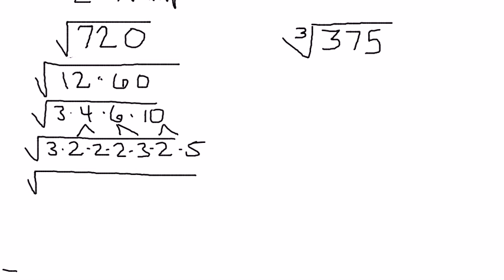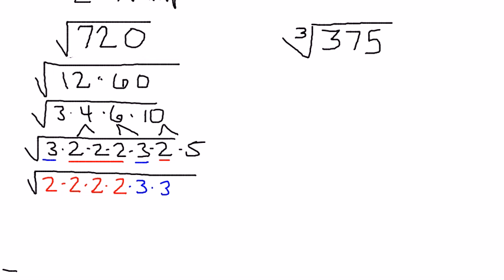I'll go with the smallest numbers first — the 2s. I have four 2s, so let's group those: 1, 2, 3, 4 twos. And then I have some 3s — there are two 3s, so I'll list those: 1, 2. And then lastly I have a 5, only one 5. So there's my prime factorization of 720.